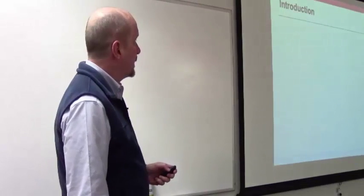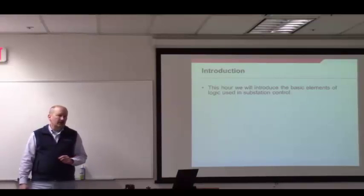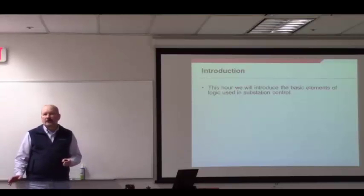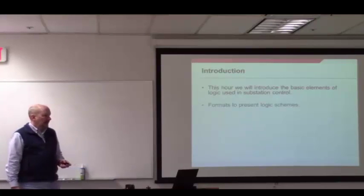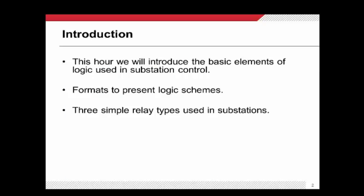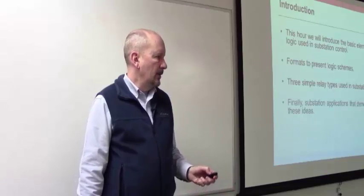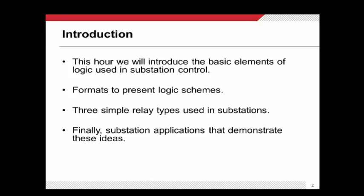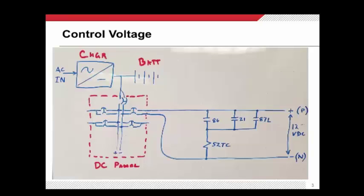In today's class, we're going to introduce some of the basic elements used in the control logic for a substation and how we implement that. We're going to talk about some formats for that logic, and I'll show you a couple pictures and examples of that. Then I'm going to introduce three real simple relay types that are commonly used in substations, things that you're going to really want to know how to use. They're very fundamental to what we do. And then finally, we're going to look at a couple applications that demonstrate these ideas. This will serve as a really good introduction to some of the meatier matters that we will dive into in classes 2, 3, and 4, where we're really going to do a deep dive into how circuit breakers work and how we control them.